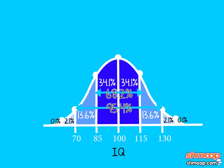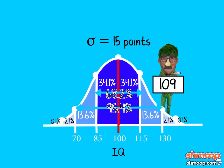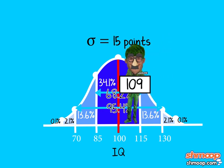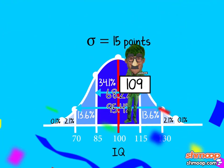Well, the average IQ score is 100, and the standard deviation is 15 points. So does Gene fall within one standard deviation? Gene, with his barely above average IQ, can join 68.2% of the population within one standard deviation of the average. Congratulations, average pants. How nice it is to be normal. Woo!